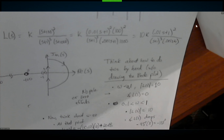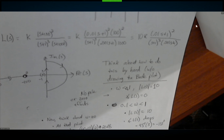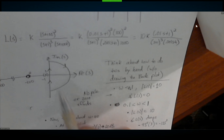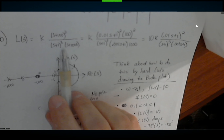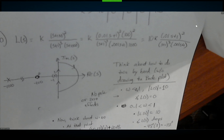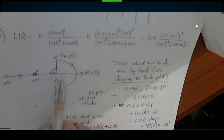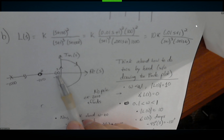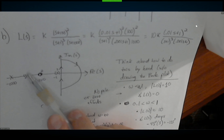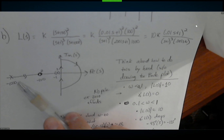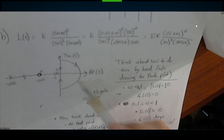Now let's look at 5B. It's a little bit trickier. Part of the reason it's trickier is this is one of the cases where MATLAB can be a little deceptive. Let's try to understand it more slowly. In problem 5B, L of s equals K times (s+100)² over (s+1)³ times (s+1000). Now for the D-contour: I have three poles at minus 1, two zeros at minus 100, and one pole at minus 1000.